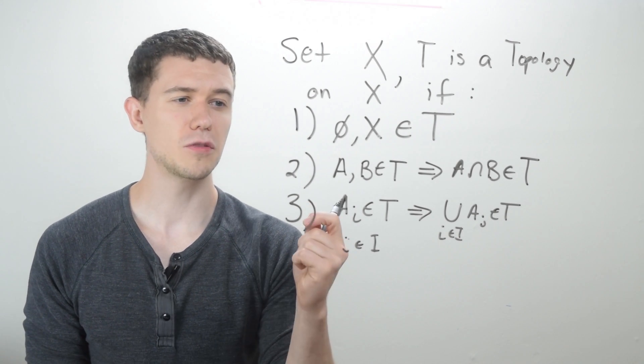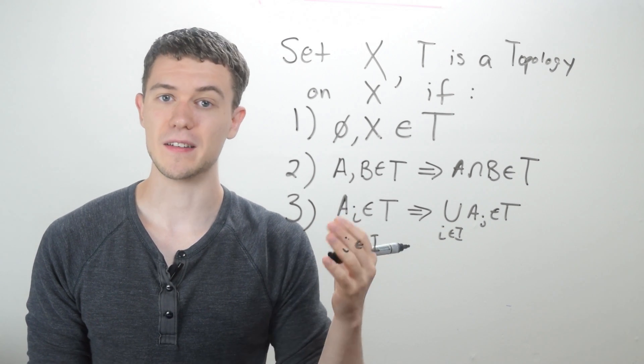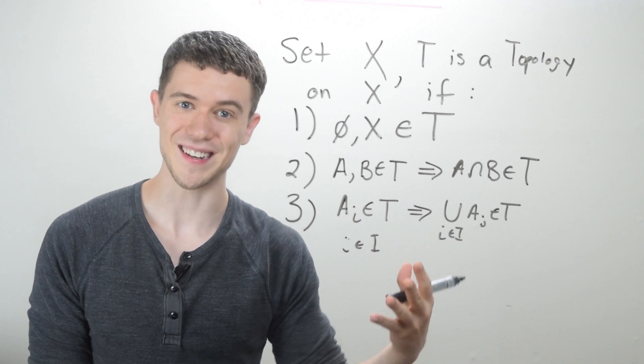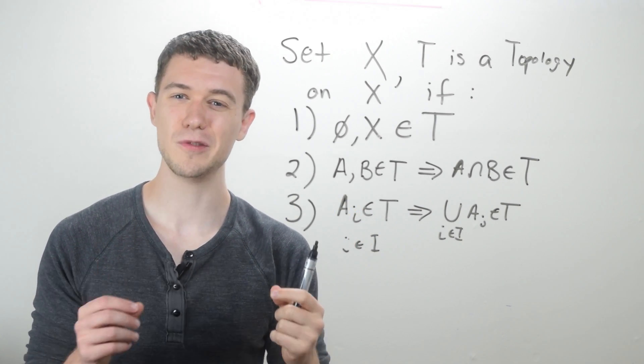And so if you have these three things, if you have any set X, then T is a topology on X, the set of sets, or rather a set of subsets of X, if it satisfies these three conditions. Let's do an example.